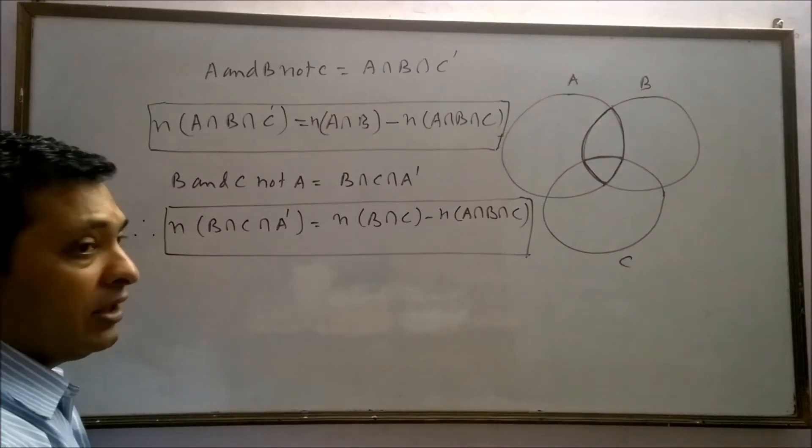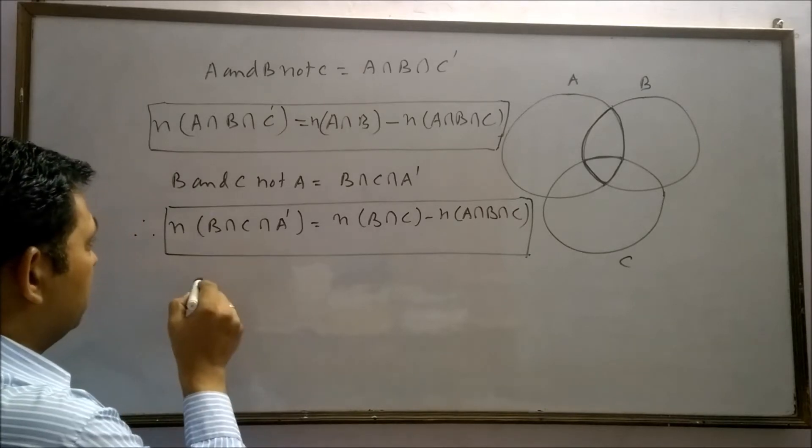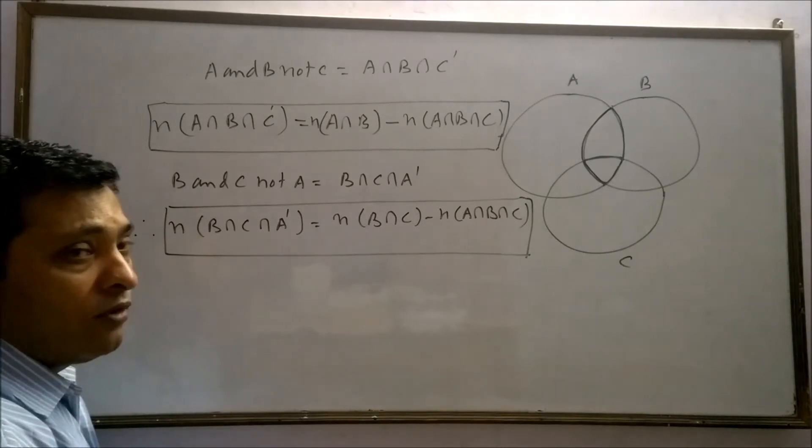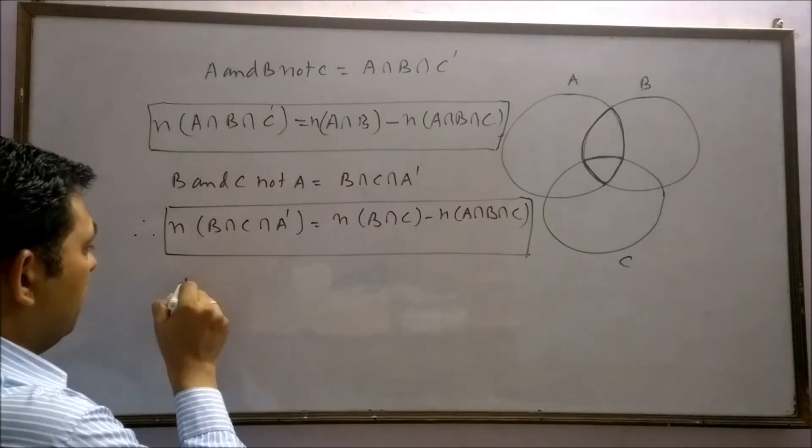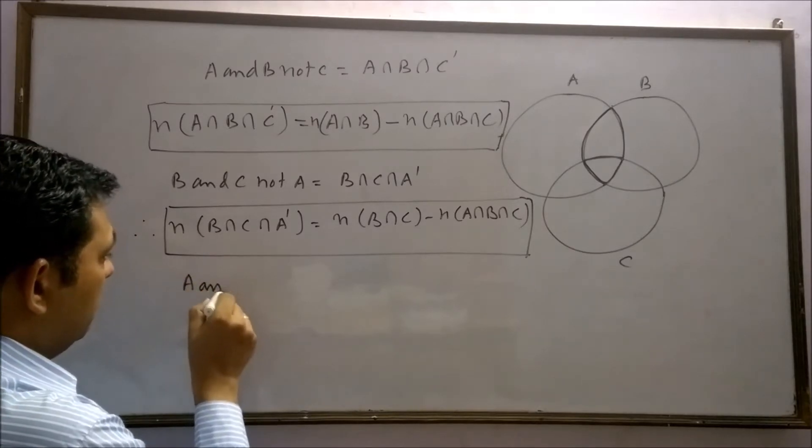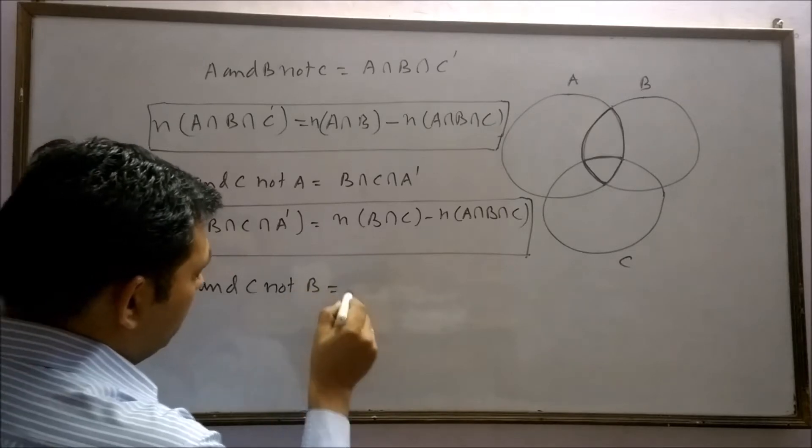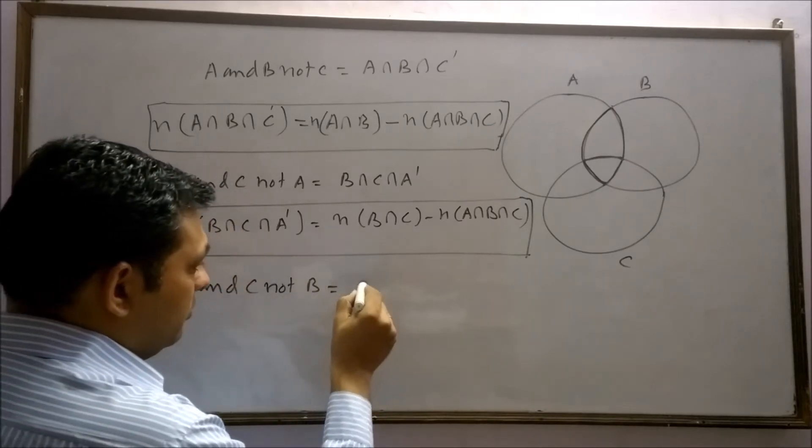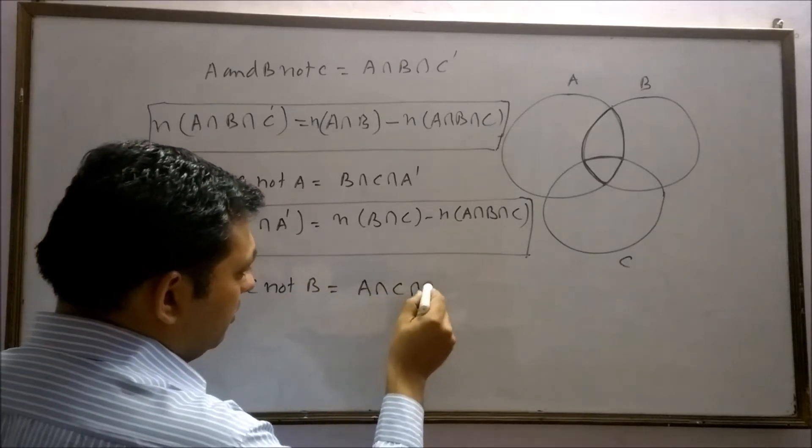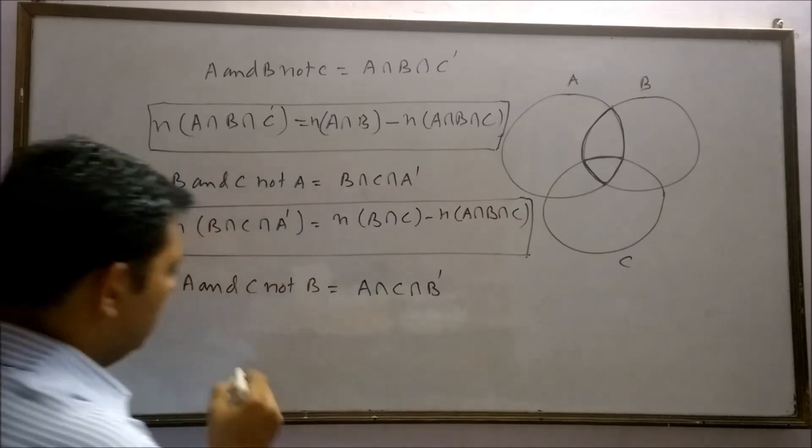One more property of the set is A and C but not B, which can be written as A intersection C intersection B complement.